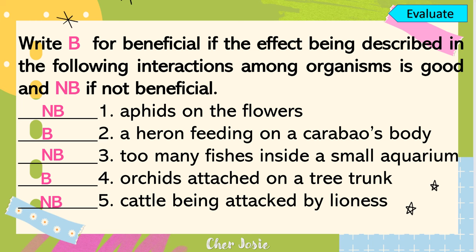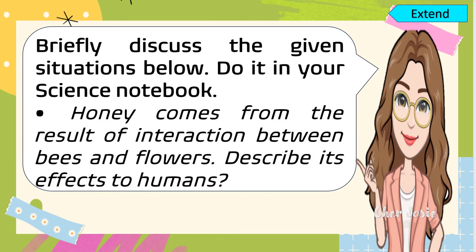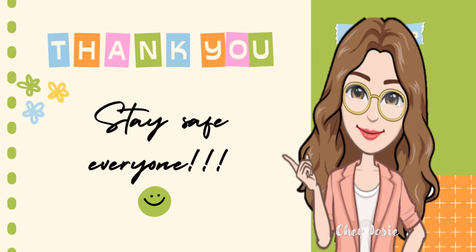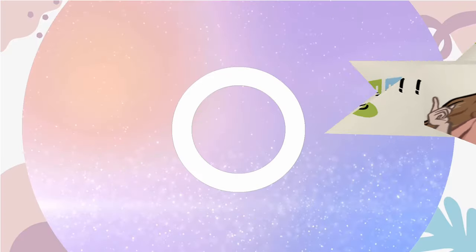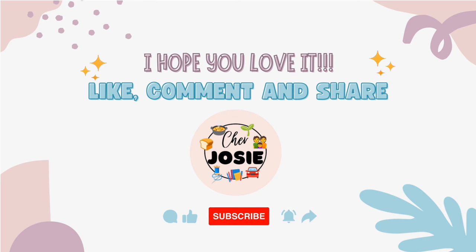I do hope you got a perfect score. For your assignment, kindly discuss the given situations below and write your answers in your notebook. Honey comes from the result of the interaction between bees and flowers — describe its effects to humans. That's all for today, kids. Thank you for listening. Stay safe, everyone. God bless. Please don't forget to like, comment, and share, and click the subscribe button. Thank you!